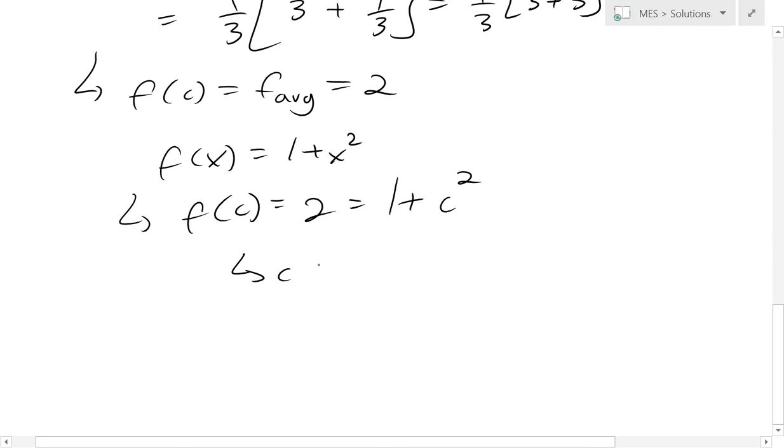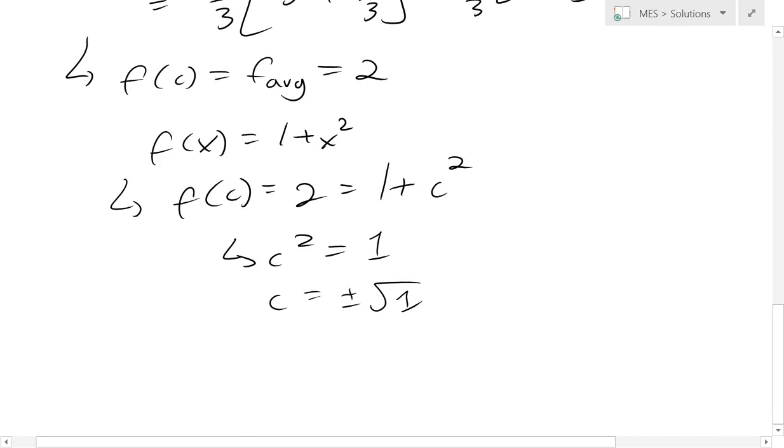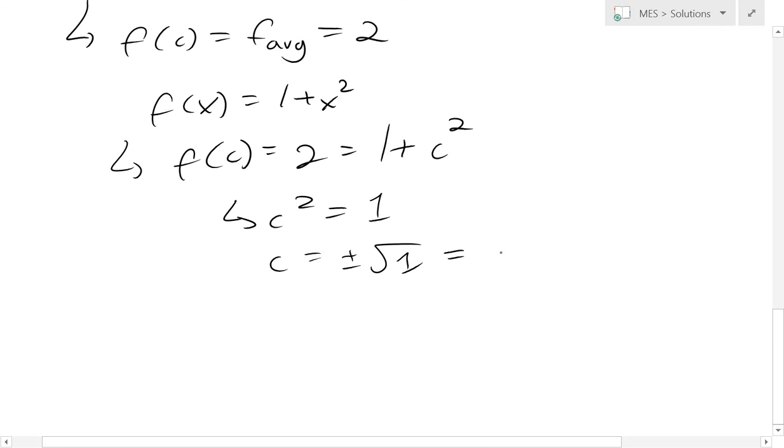So now we just solve for c, so c² equals 2 - 1 which is 1. So c now is going to equal to plus or minus the square root of 1. Square root of 1 is just 1, so we get plus or minus 1.